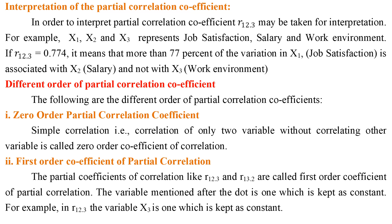For interpretation of the partial correlation coefficient, if x1, x2, and x3 represent job satisfaction, salary, and work environment respectively, and r12.3 equals 0.774, it means that more than 77% of the variation in x1 (job satisfaction) is associated with x2 (salary) and not with x3 (work environment).